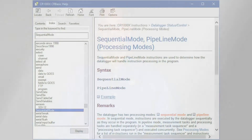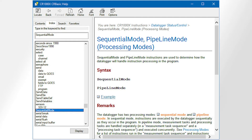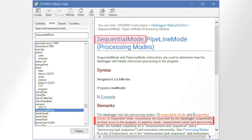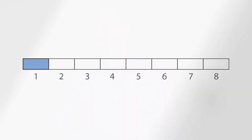Let's start with a more straightforward mode: sequential mode. The CR Basic editor help offers this description for the sequential mode instruction. In sequential mode, instructions are executed by the data logger sequentially as they occur in the program. In other words, your program runs from top to bottom. You can also think of sequential mode like this, with one instruction being executed after another.